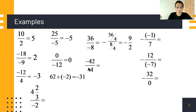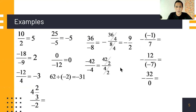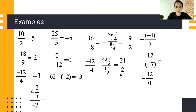Next: negative 42 divided by negative 4. Same signs, so the quotient is positive. We reduce 42 over 4 by dividing by 2, giving 21 over 2. The final answer is 21 over 2.